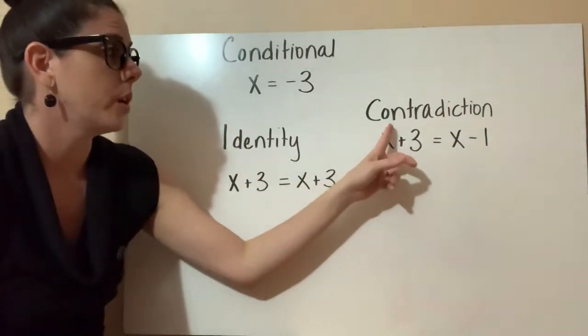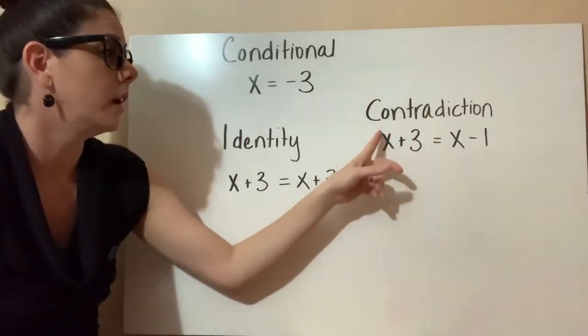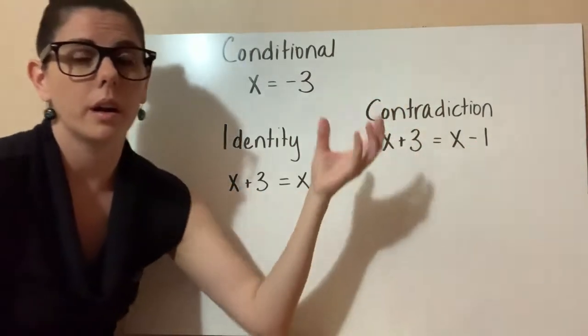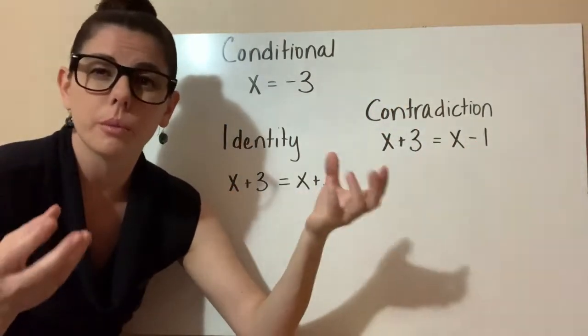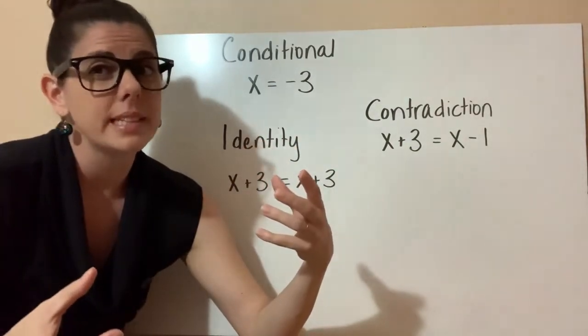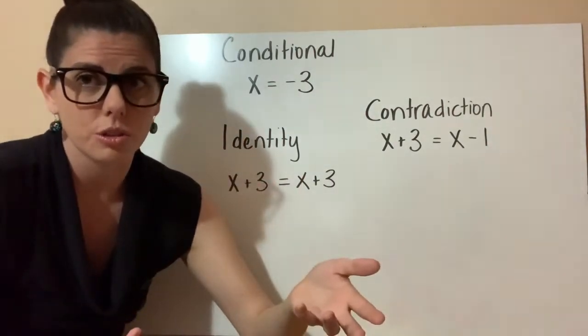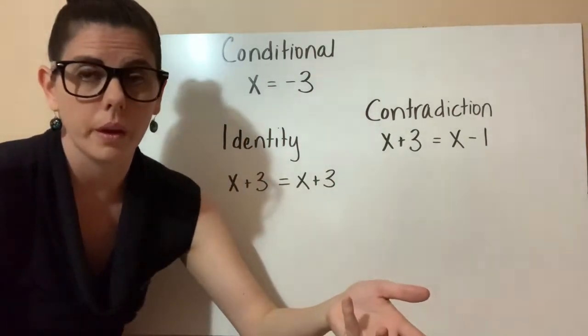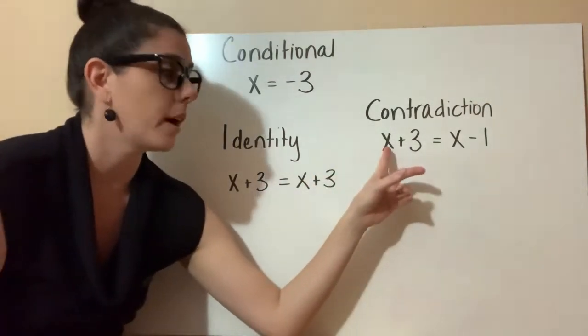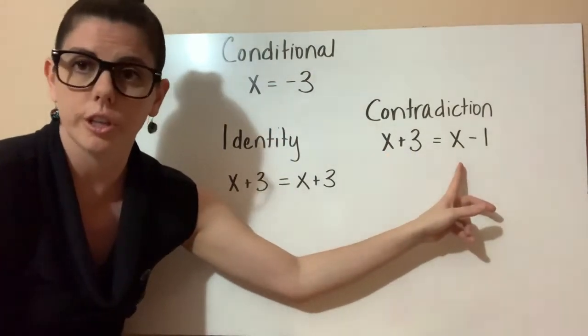And then you have something like this, where you have a contradiction. This is where you have x plus 3 and x minus 1, where you get the variable on both sides, but you're adding or subtracting different numbers. And that means that no matter what you do, there will never be a solution. It'll never work.